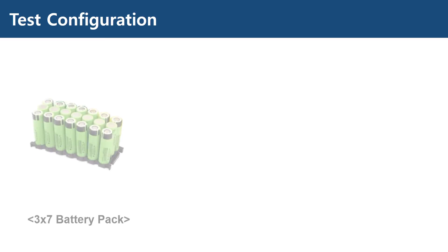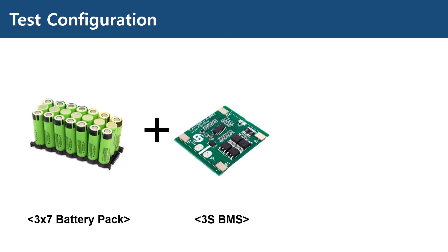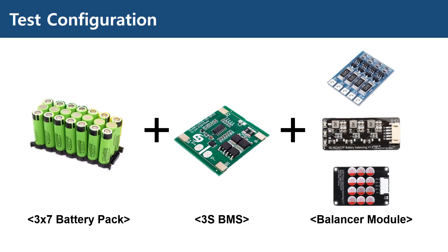Now let's review the test results for these balancer modules. I used a 3×7 18650 cell pack with a 3S BMS for the test, with the various balancer modules introduced in the previous slides. The first cell in this battery pack has a slightly lower capacity compared to the other two cells — it was purchased at a different date, possibly made from a different batch of the manufacturer, which should be avoided when forming a battery pack like this one.